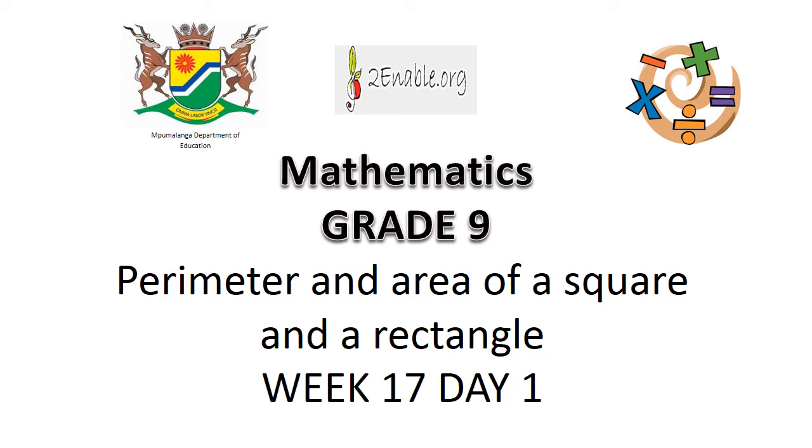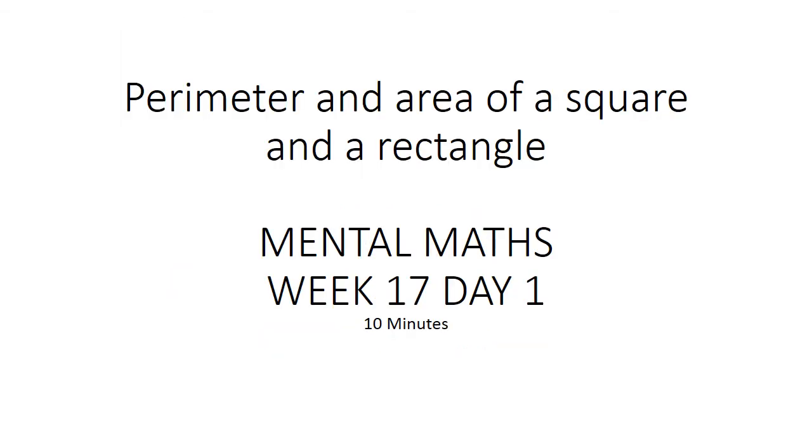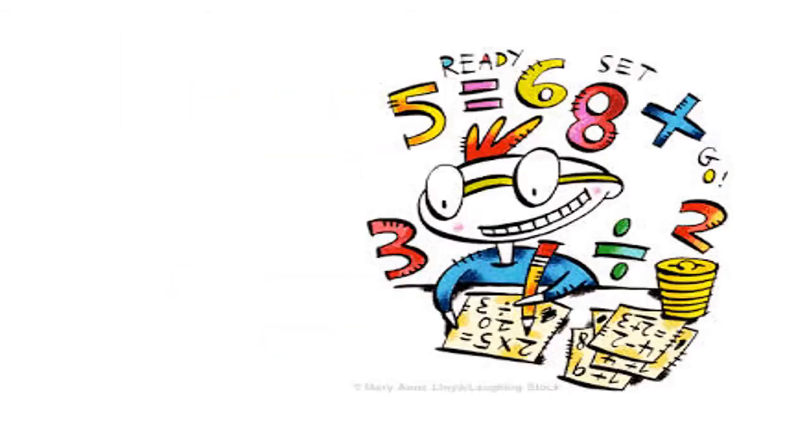Perimeter and area of a square and a rectangle. Mental math. Times tables. 11 times 12 equals 132.